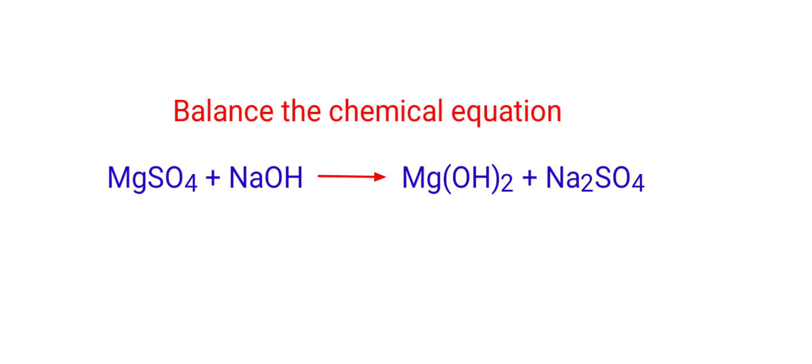Balance the Chemical Equation. Magnesium Sulphate plus Sodium Hydroxide gives us Magnesium Hydroxide plus Sodium Sulphate.